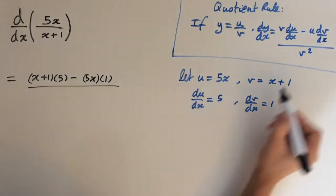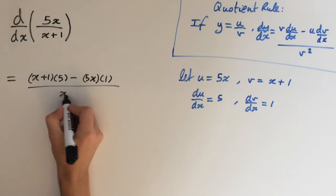And on the denominator, we're going to get v squared, which is x plus 1 all squared.